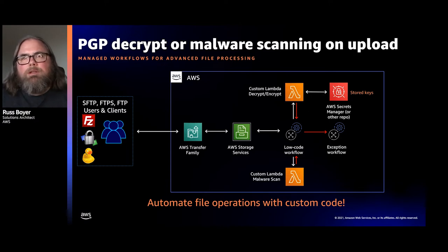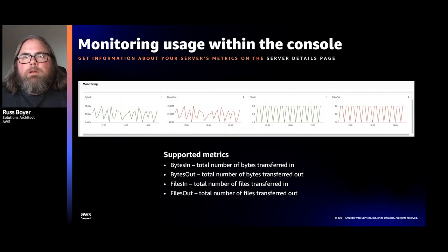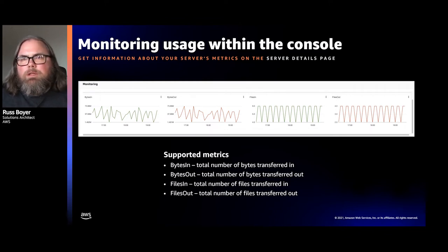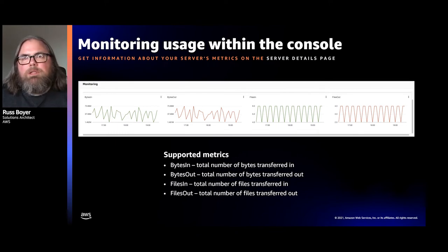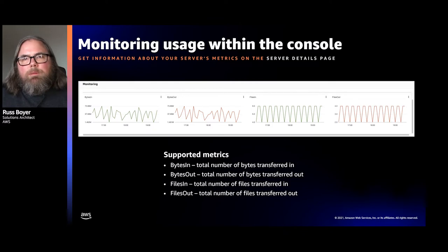Once files are uploaded, you need to process them. We launched our low-code workflows feature in September. This lets you specify steps executed to process data as it comes in, with centralized logging to CloudWatch under Transfer Family. Workflows support custom Lambdas for advanced processing — like decrypting a PGP-encrypted file on ingest or doing a malware scan. The workflow engine also lets you specify exception steps: for example, when a malware scan is positive, alternate steps can kick in. We've also added server statistics to the console — number of files and data volume — and enhanced CloudWatch logging for auditing and compliance.